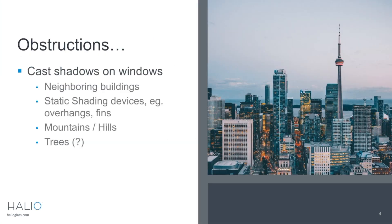We've heard about obstructions from some of the previous presenters, but they're essentially objects exterior to the building that can cast shadow on windows. Neighboring buildings is a common one. Static shading devices attached to the building, like overhangs or fins, can also cast shadows. Topography like mountains and hills can cast shadows — for example, if you're in Innsbruck or Boulder. Trees are also important to model and account for in shading control, and we may need a seasonal filter for deciduous trees.